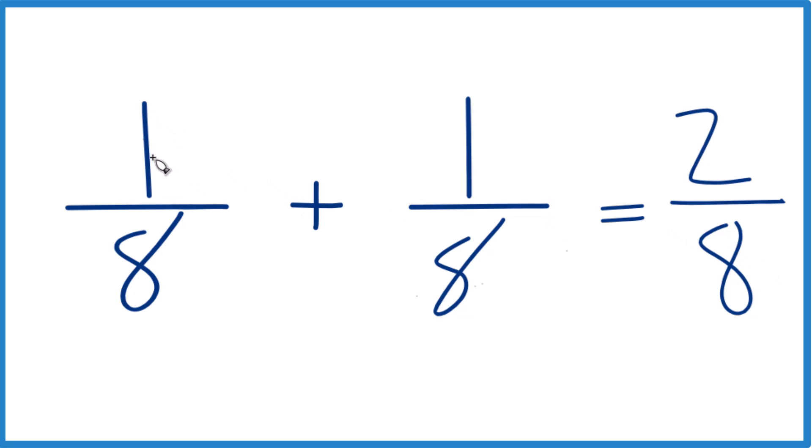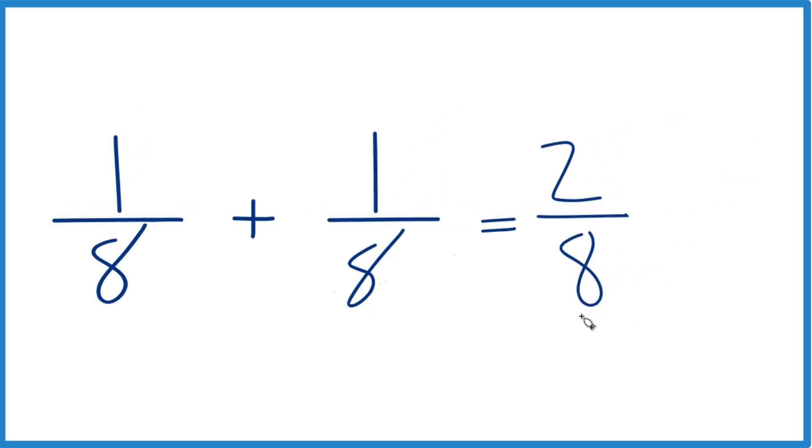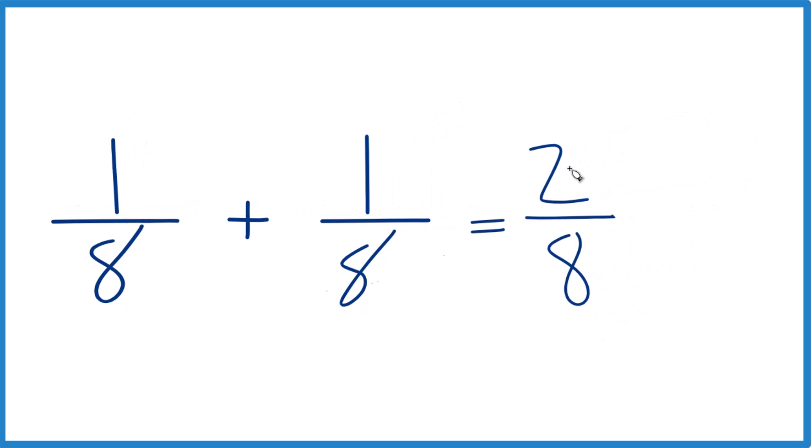And it makes sense if you have one piece of 8 and another piece of 8, you have two pieces of 8. But this isn't simplified. We can reduce this down further because they're both even numbers.